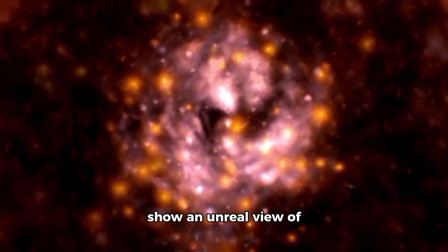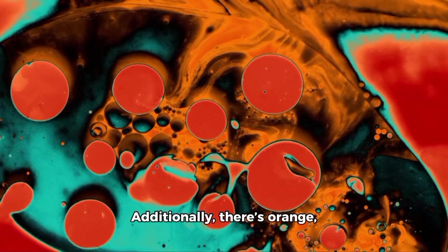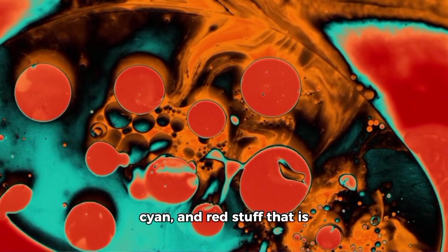The James Webb images now show an unreal view of this galaxy mashup. Even the faintest tails are visible, stretching out, showing the gravity pulling them together. Additionally, there's orange, cyan, and red stuff that is scattered organic material.